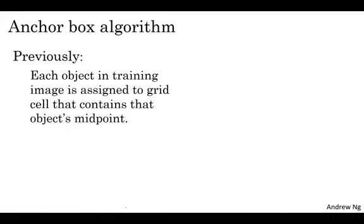So to summarize, previously before you were using anchor boxes, you did the following, which is for each object in the training set image, it was assigned to the grid cell that corresponds to that object's midpoint. And so the output Y was three by three by eight, because of the three by three grid and for each grid position, we had that output vector, which is PC then the bounding box and C1, C2, C3.